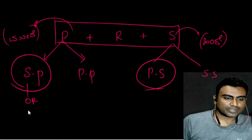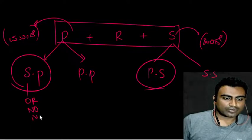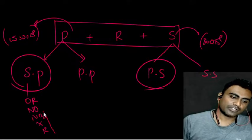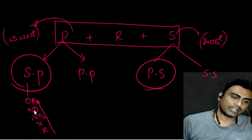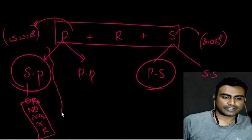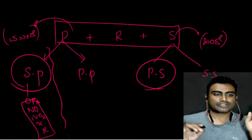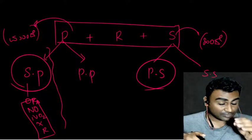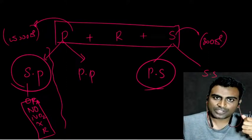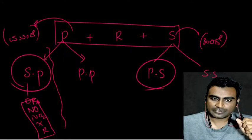So secondary prefix includes alkoxy group, nitro group, nitroso group, halogens, and alkyl groups. Practice these and it will be enough for the exam. This is all about the secondary prefix. I hope you enjoyed this lecture. Thank you, and get ready for the next session.